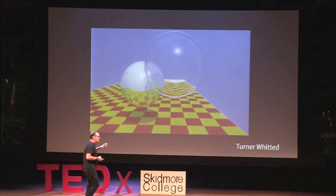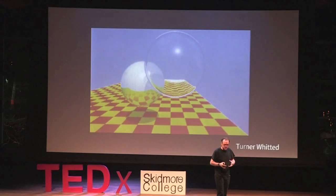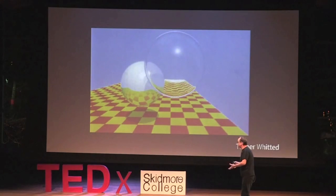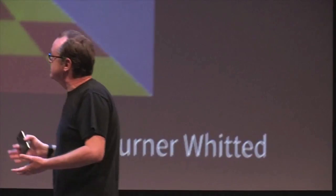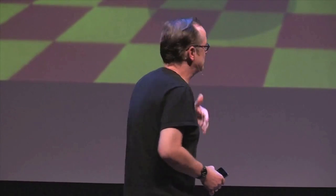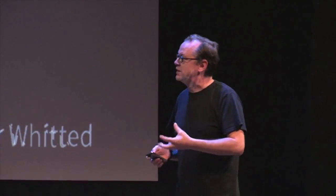Around the same time, computer graphics people were experimenting with exact physical simulations of physical optics. This is work done by Turner Whitted at the University of North Carolina, around 1979 or 1980. It's basically a physical simulation of the rays of light as they travel through the world and intersect with objects. This is very primitive, but at that time it was amazing — here was a physical simulation of the real world. So I abandoned architecture altogether, because this just seemed like much too cool of a thing, and I started studying this line of work.